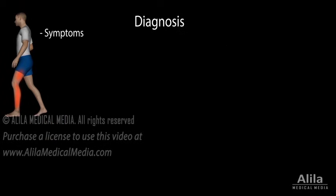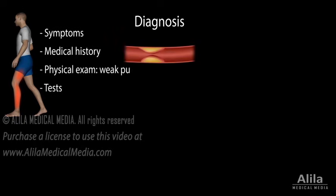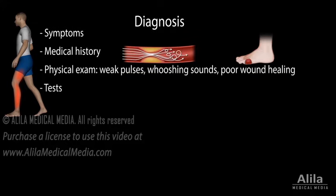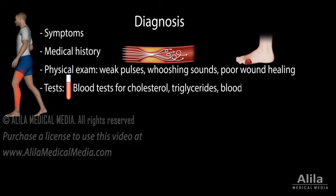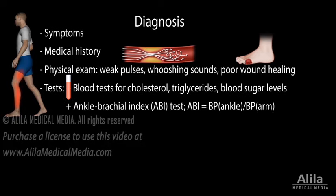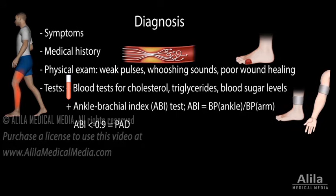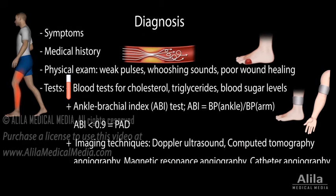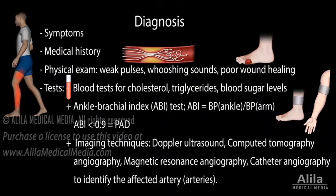Diagnosis is based on symptoms, medical history, physical exam, and a number of tests. The purpose of the physical exam is to look for signs such as weak pulses, whooshing sounds of obstructed blood flow, and evidence of poor wound healing. Blood tests are done to evaluate cholesterol, triglyceride, and blood sugar levels. The ankle brachial index test, or ABI test, is commonly performed to compare blood pressures in the ankle and the arm — an ABI lower than 0.9 indicates PAD. Imaging procedures may also be performed to identify the affected arteries.